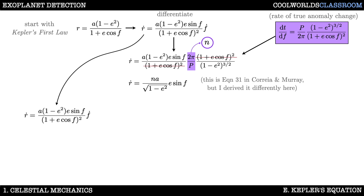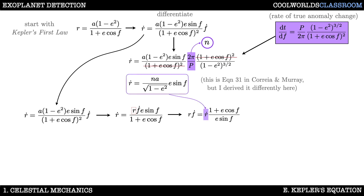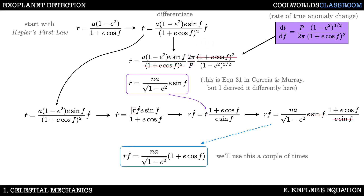Now let's pull the first r-dot equation down. Looking closely you can see an r term inside it, so making that substitution — highlighted with a red box for clarity — gives us r multiplied by f-dot together. Let's make those the subject. Next we replace the r-dot term with the result above it, and the e·sin(f) terms cancel, simplifying everything down to just this. This is the intermediate result that we're going to need.